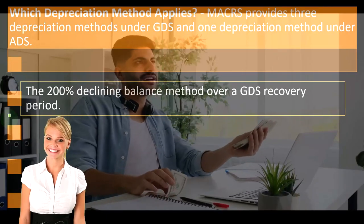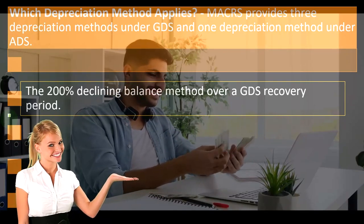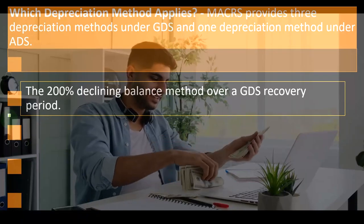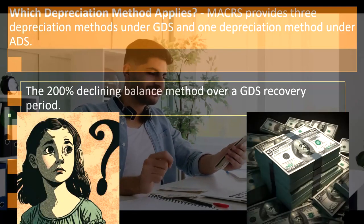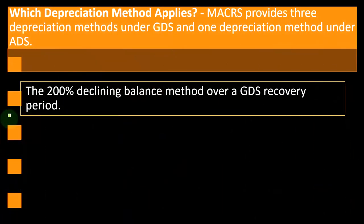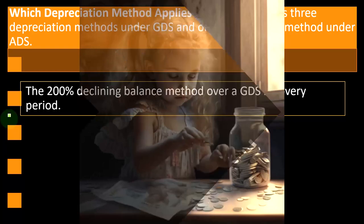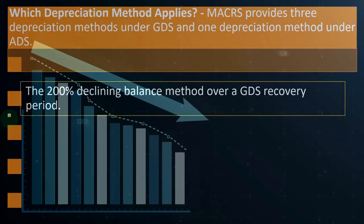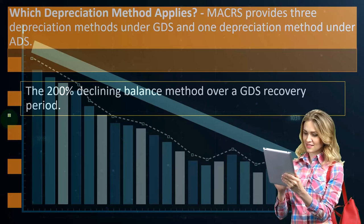When we talk about 200%, comparing that to normal depreciation theory from a bookkeeping standpoint, you would start with straight-line. Straight-line essentially means taking the cost, dividing it by the useful life, and allocating that cost evenly over the useful life until fully depreciated. But you might have accelerated depreciation methods, one common one being double declining balance — a 200% declining balance method — and that's what we're basically talking about here.